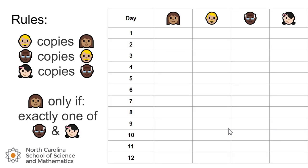To learn how a linear feedback shift register works, we're going to perform the following thought experiment. Let's say we've got four people here and they're kind of imitators, copycats. They are going to decide every day of the week whether or not they're going to wear a hat. We've got our woman with the brown hair, our blonde man with the mustache, the person with the white hair and glasses, and the woman with the bow in her hair.